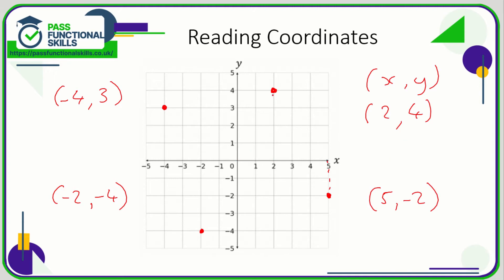So the key thing to remember is horizontal first, then vertical. Along the corridor, up the steps. Along the corridor, up the steps. Or along the corridor, suppose it's down the steps. Along the corridor, down the steps. So x then y, horizontal then vertical.